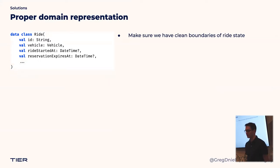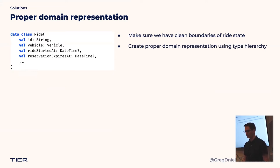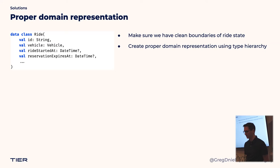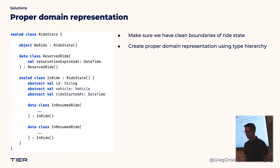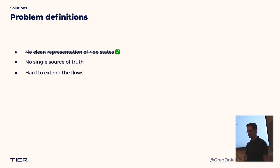At that point we were confident in knowing what the problems are, so it was time to gather around a whiteboard and design solutions. The first was a proper domain representation of ride states. We wanted clean boundaries for our state handling, so we removed any fields associated with the ended ride state. We then created a type hierarchy to represent our states — you have options like a sealed class or abstract class. We ended up going with a sealed class, and it became much more readable and clear, and the mass of nullable fields was over.